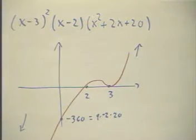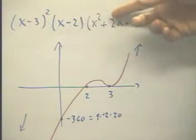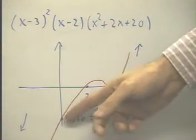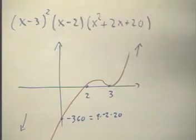As we saw on the previous clip, the graph of (x-3)² times (x-2) times (x²+2x+20) has a y-intercept of negative 360, zeros at 2 and 3. All that's obvious.